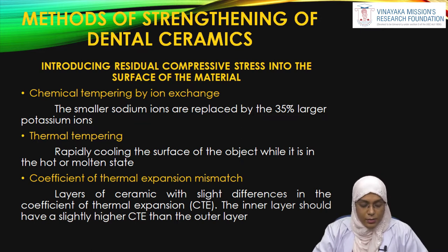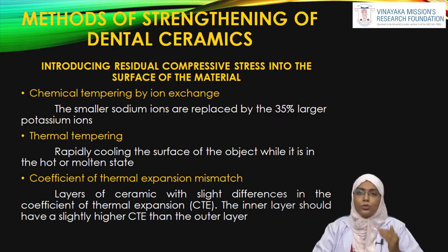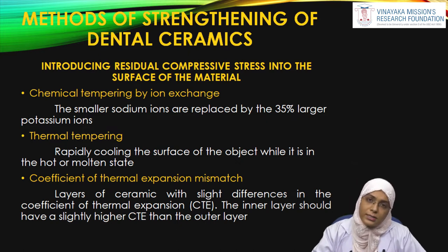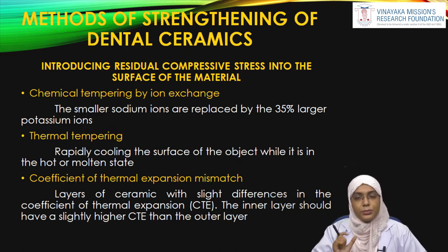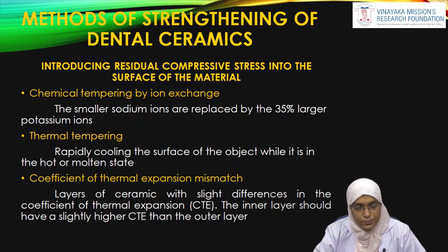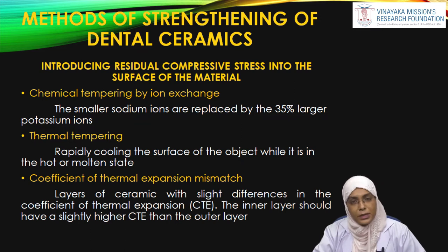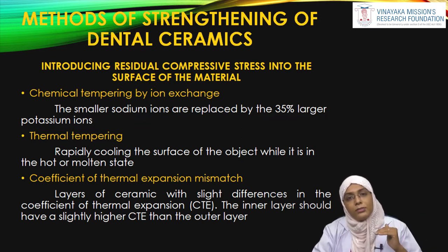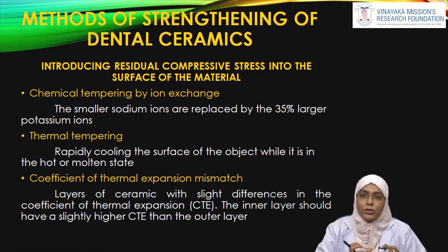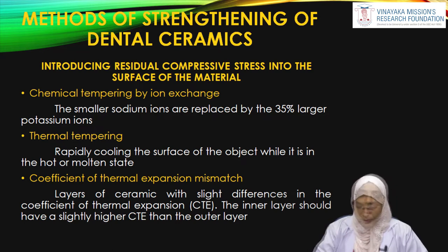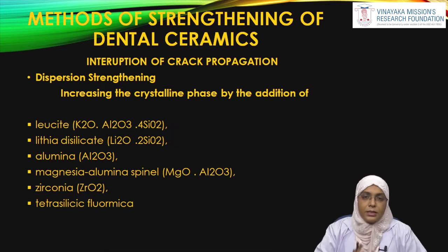The third method is by altering the coefficient of thermal expansion. The basic concept is that you add ceramic layer by layer, and there must be a slight mismatch in the coefficient of thermal expansion between these layers. The inner layer should have a slightly higher coefficient of thermal expansion. When you add an outer layer with a lower coefficient of thermal expansion, on contraction the inner layer contracts more, resulting in a compressive stress within the material.